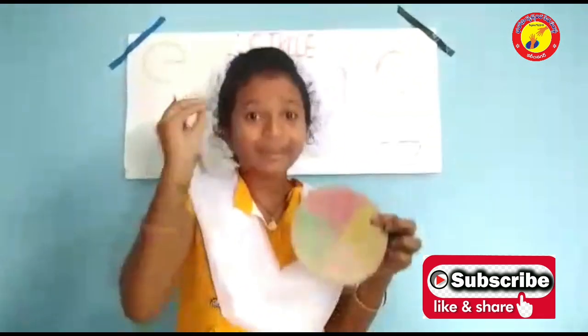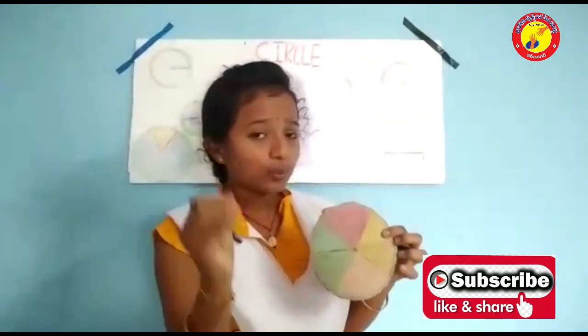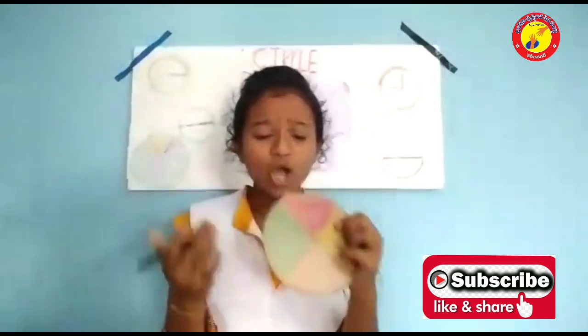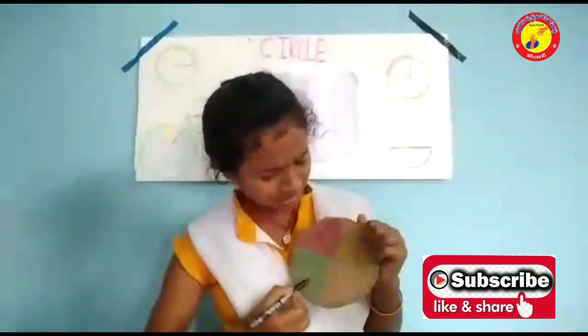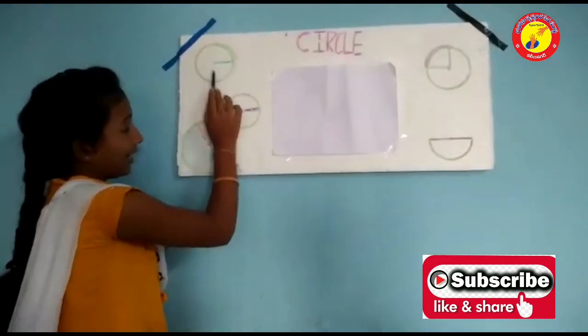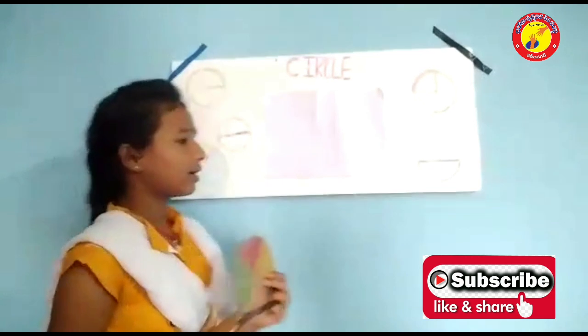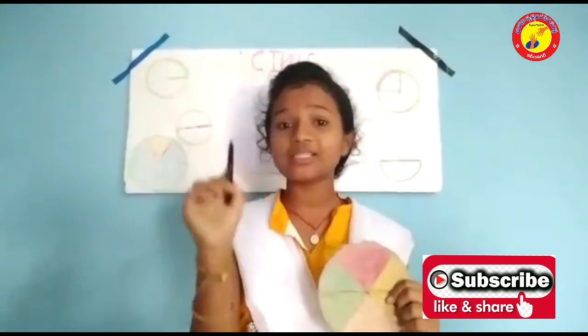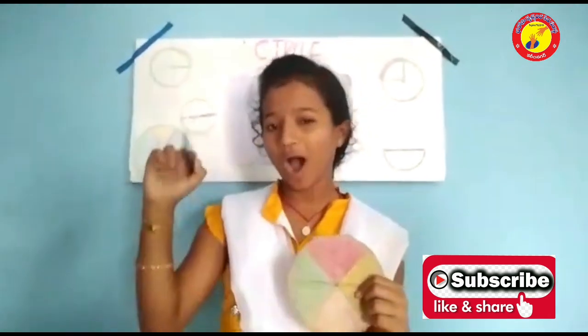A line segment joining two points on the circumference of a circle is known as a chord. A chord which passes through the center of the circle is known as a diameter.